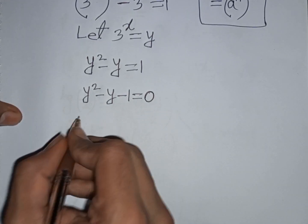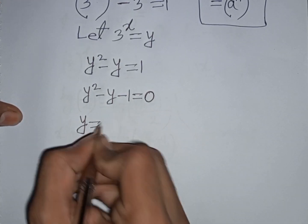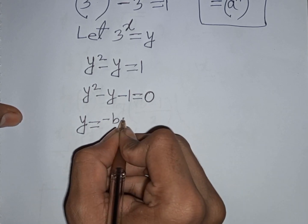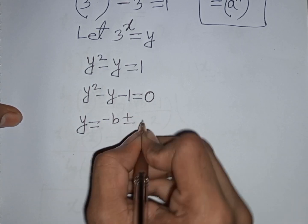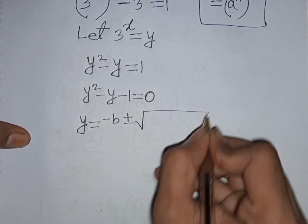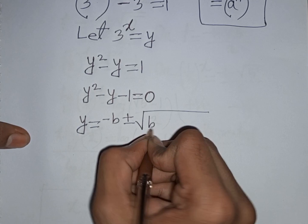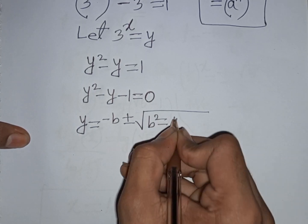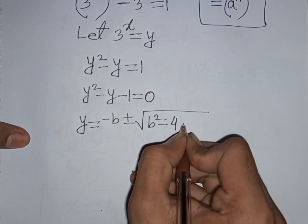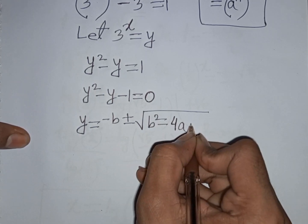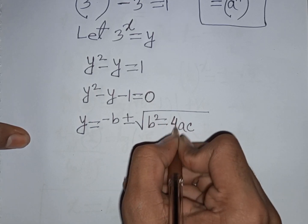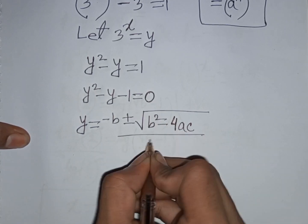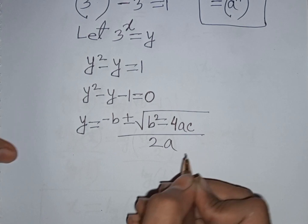Now we apply the quadratic formula: y equals negative b plus or minus square root of b squared minus 4ac, all divided by 2a.